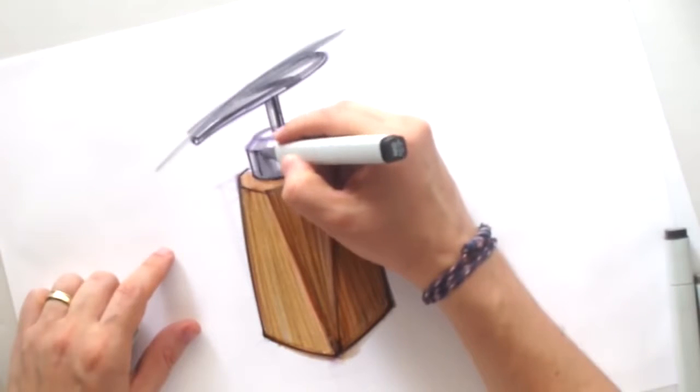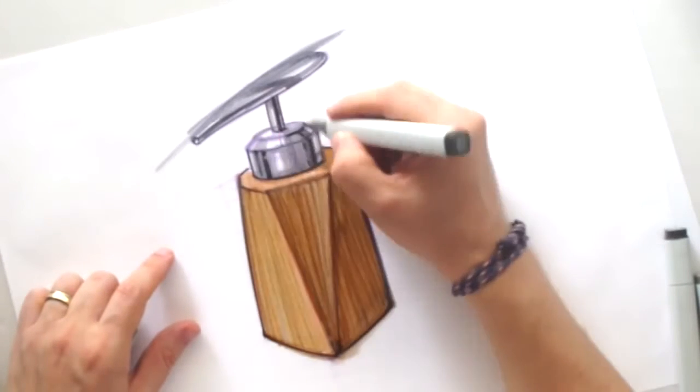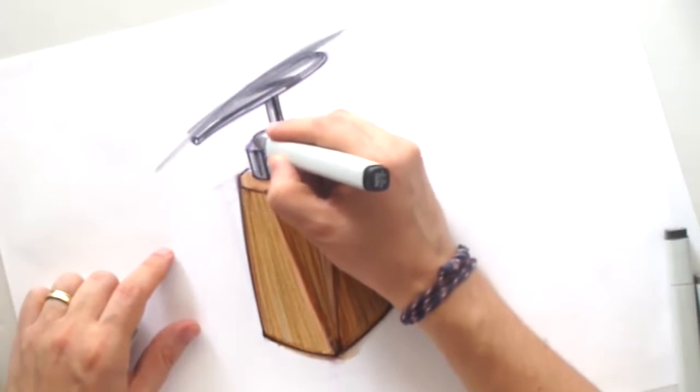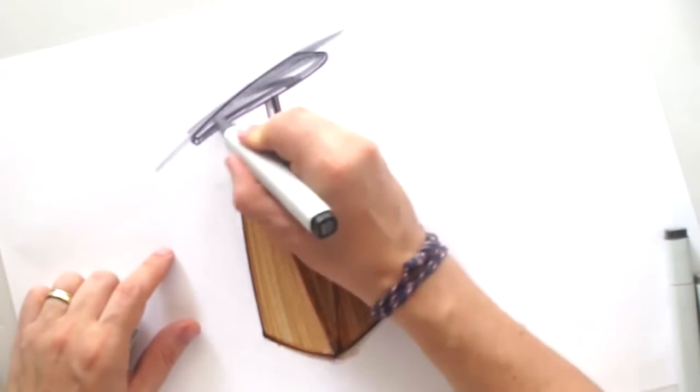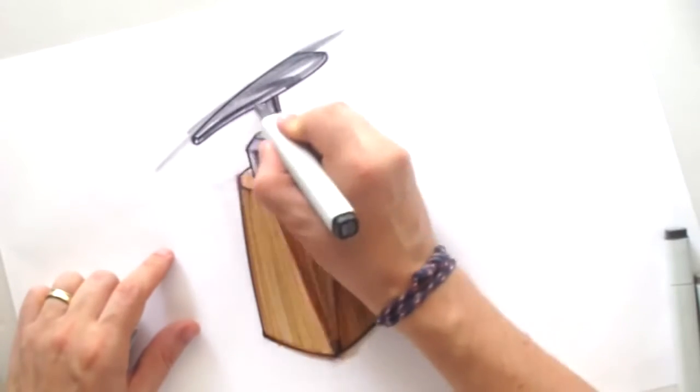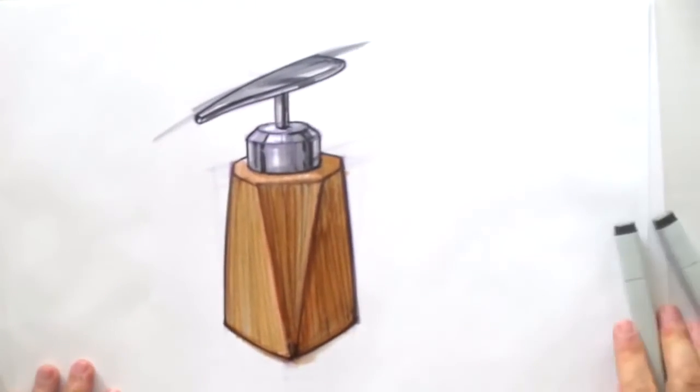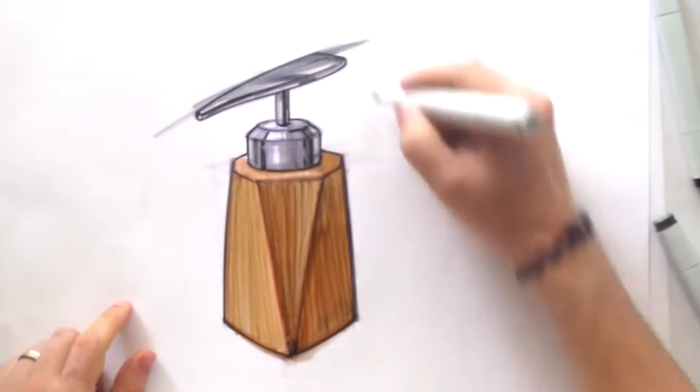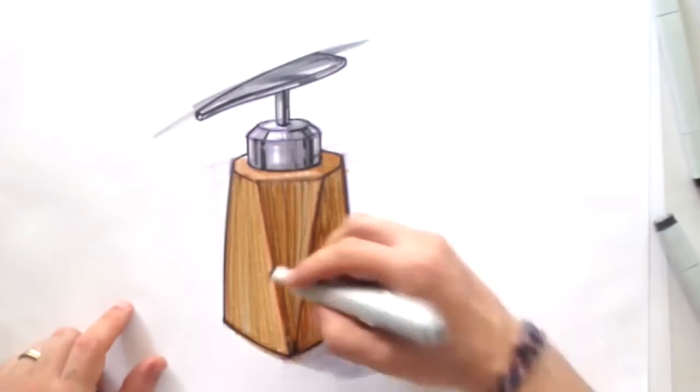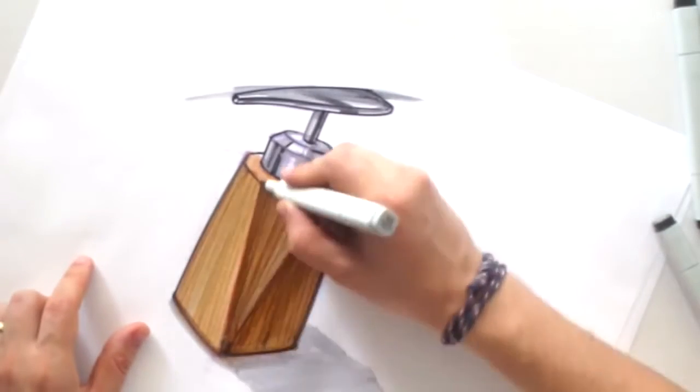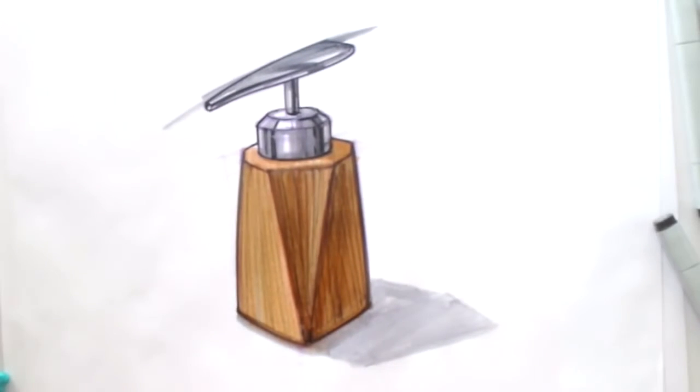By the way, for these renders I'm using Copic A3 paper. It's quite good for blending and mixing the markers. But actually, I don't care about what kind of material or paper to use. It's all about your passion. If you like to sketch, if you like to draw, you can do this on any material, any paper, with any tool in your hand.